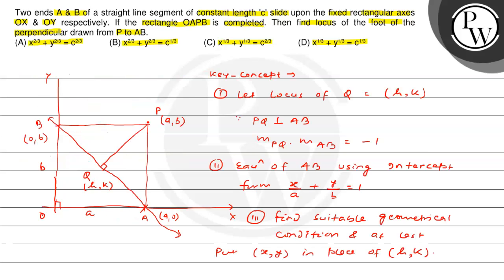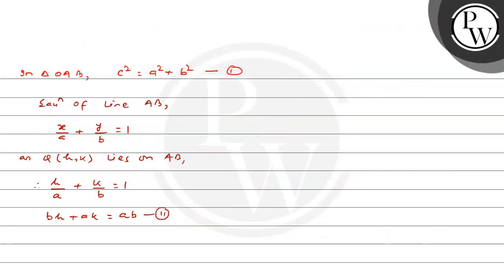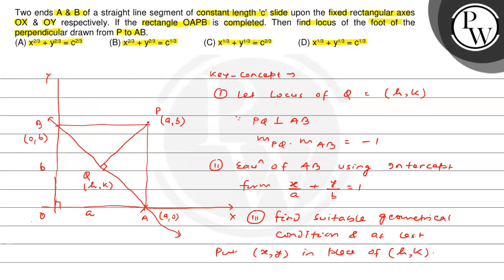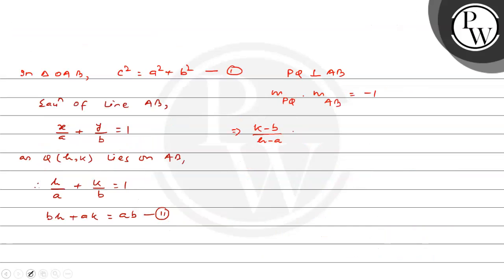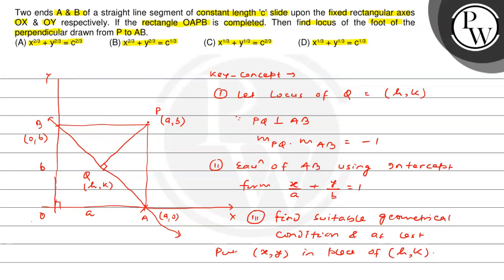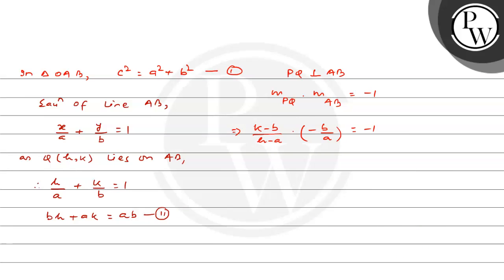Since PQ is perpendicular to AB, the slope of PQ times the slope of AB equals -1. P has coordinates (A, B), and Q has coordinates (H, K). So slope of PQ = (K - B)/(H - A), and slope of AB = (0 - B)/(A - 0) = -B/A. Multiplying and simplifying gives AH - BK = A² - B². This is equation 3.